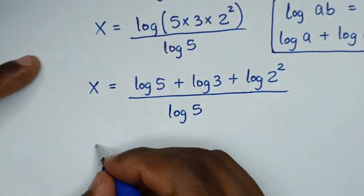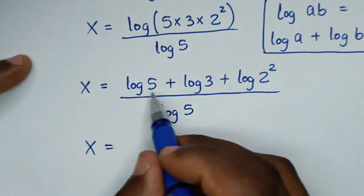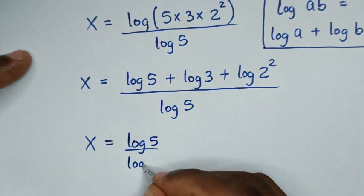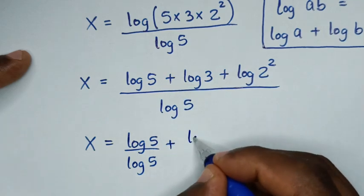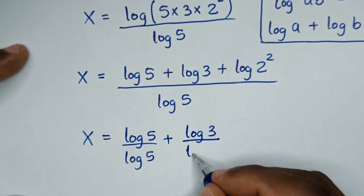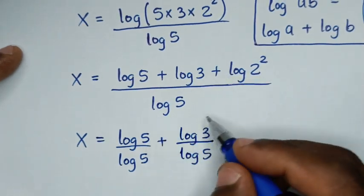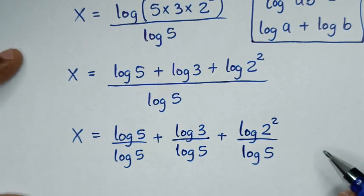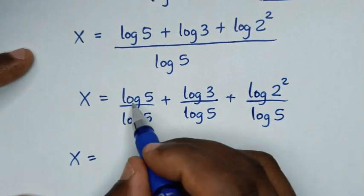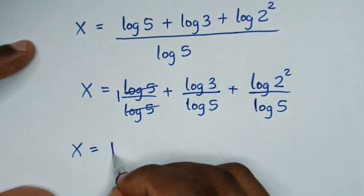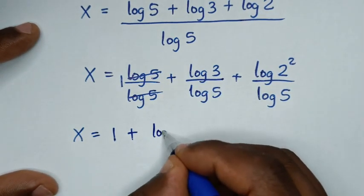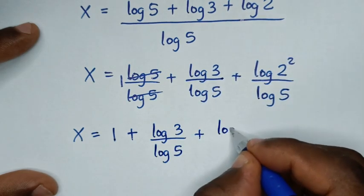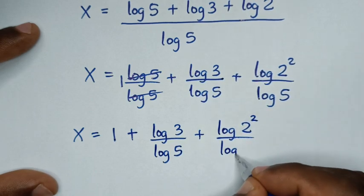Then we'll divide by log of 5 in this part, this part, and this part. So it will be log of 5 over log of 5 plus log of 3 over log of 5 plus log of 2 squared over log of 5. Then log of 5 divided by log of 5 is 1, so it will be 1 plus log of 3 over log of 5 plus log of 2 squared over log of 5.